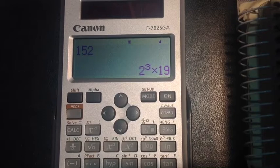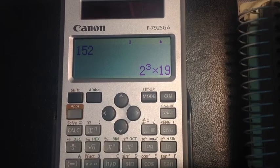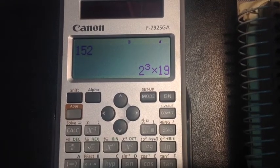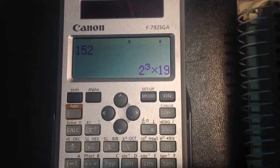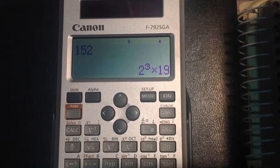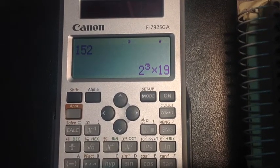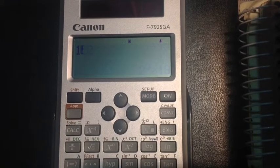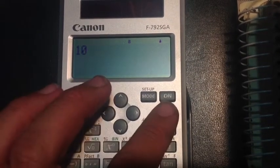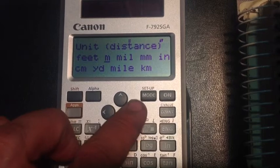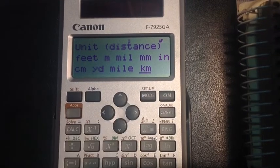One of the things that impressed me the most at first glance with the Canon F792SGA is the library of constants and conversions. So if I was to go ahead and convert, say, 10 kilometers to miles, for example,